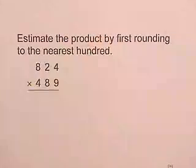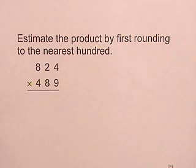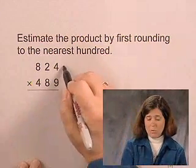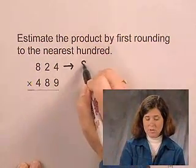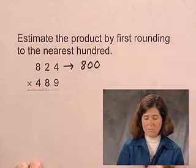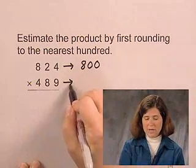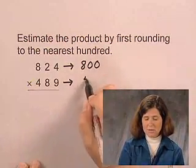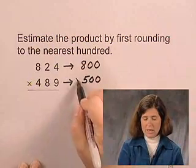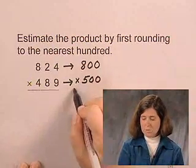In this exercise, we'll estimate by rounding. We'll estimate the product by first rounding to the nearest hundred. To do so, we round 824 to the nearest hundred, which is 800. We round 489 to the nearest hundred, which is 500, and we multiply.